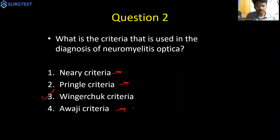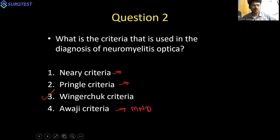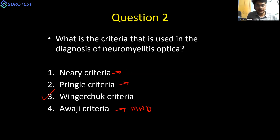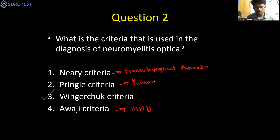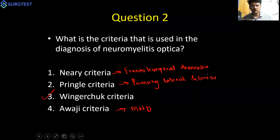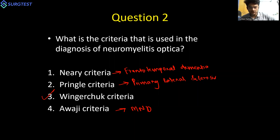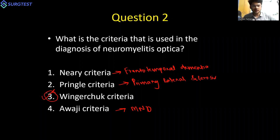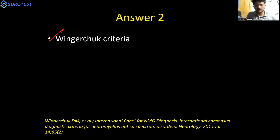Mohammed answered correctly: Avaji criteria is for MND. Neary criteria is used for the diagnosis of frontotemporal dementia, and Pringle criteria is used for the diagnosis of primary lateral sclerosis — a type of motor neuron disease that predominantly involves upper motor neurons. To summarize: Pringle criteria for primary lateral sclerosis, Neary criteria for frontotemporal dementia, Avaji criteria for MND, and the important one for this class — Vingachak criteria for neuromyelitis optica.